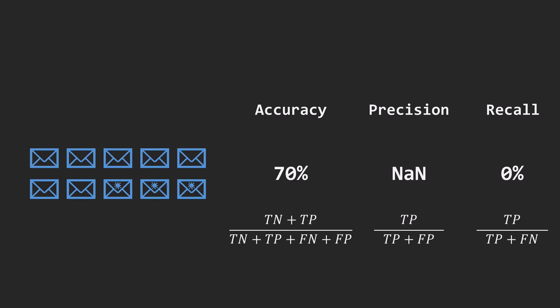In practice, as there are positive samples in our test set that the model just missed, we can assign a value of 0 to precision instead of not-a-number as well.